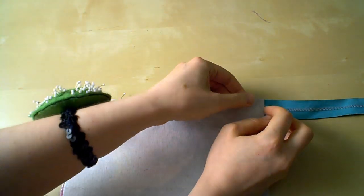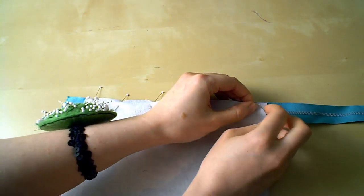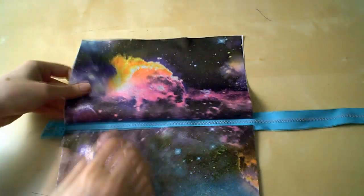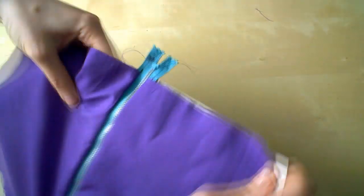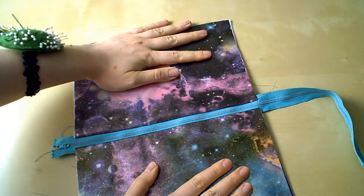Now we assemble and pin the other side the same way we did before. Lining right side up, zipper right side up, outer fabric right side down. Sew it together, open it up and admire your handiwork, and then press the seam.